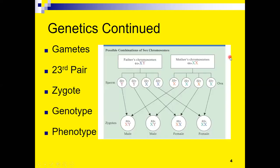In humans, we also have specialized cells referred to as gametes. These are the reproductive cells — in males, the sperm, and in females, the ova. These gametes have rather than 23 pairs of chromosomes, just 23 separate chromosomes. So we inherit half of our chromosomes from our mother and half from our father. The 23rd pair of chromosomes determines the biological sex of the zygote — the first cell formed when the sperm and ovum unite.